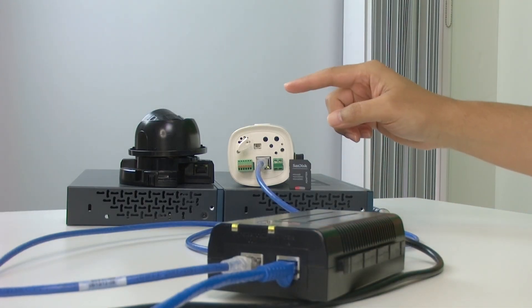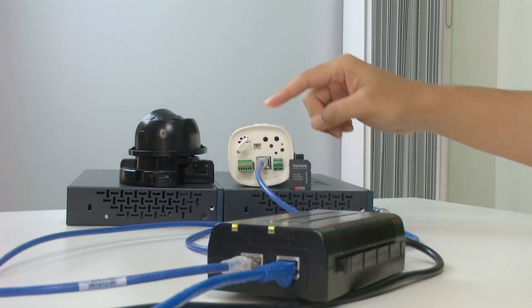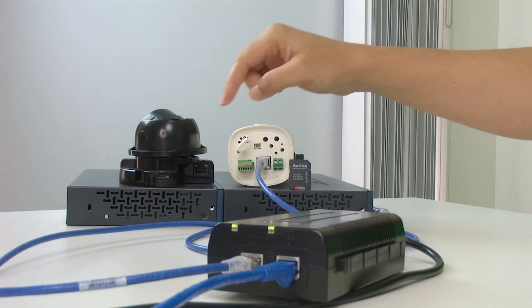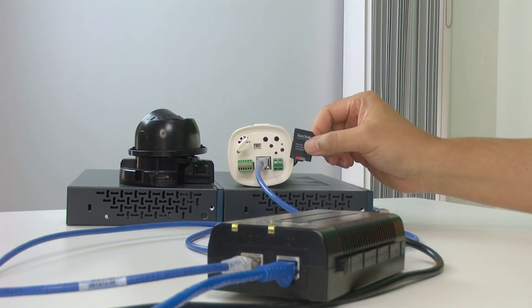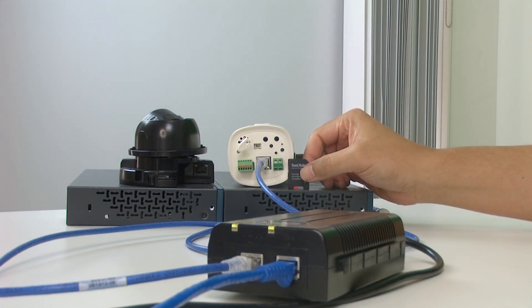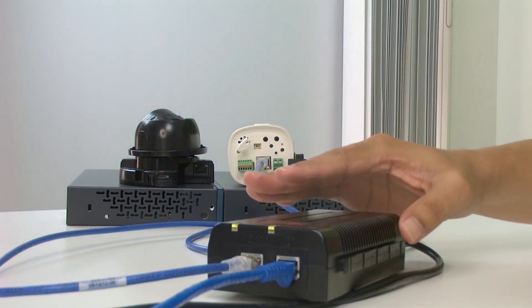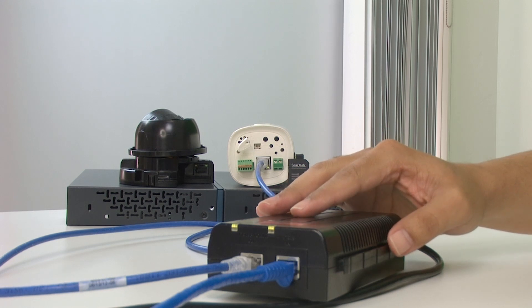So let's come here to my desk, I'm gonna show you some equipment. Here I have a box camera and also have a dome camera, those are IP devices. And here I have an SD card, I'm gonna talk about it a little bit later, and here I have a power injector.